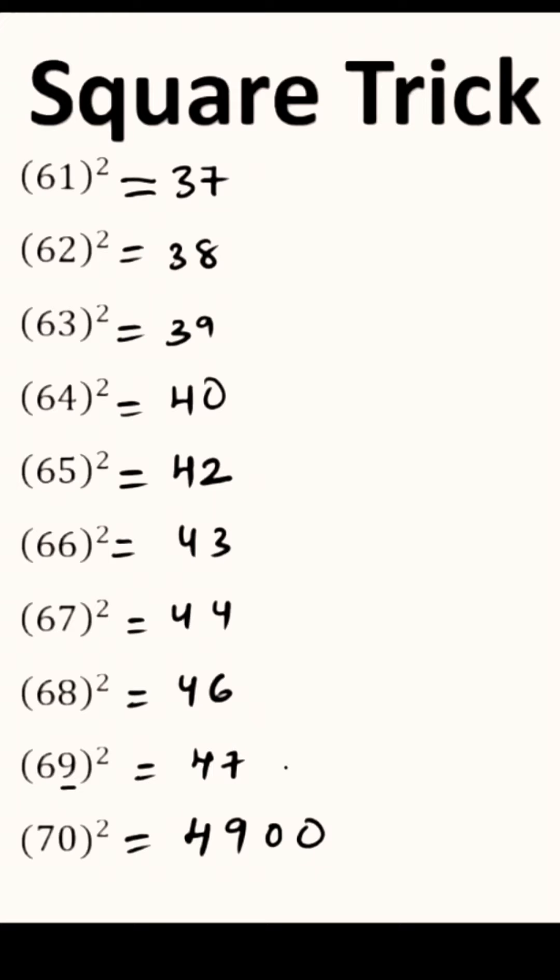Square of 19 is 361, so leave 3, write down 61. We know the square of 18, that is 324, leave 3, write down 24.